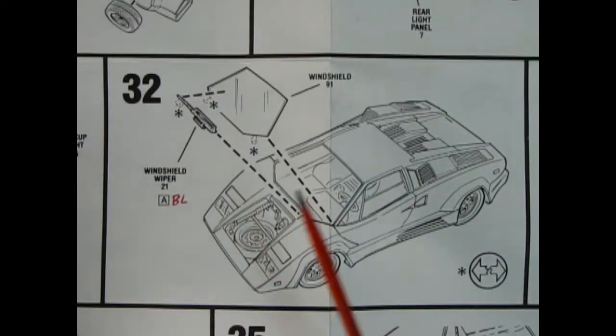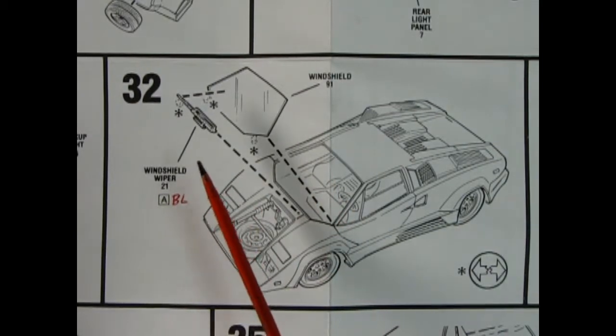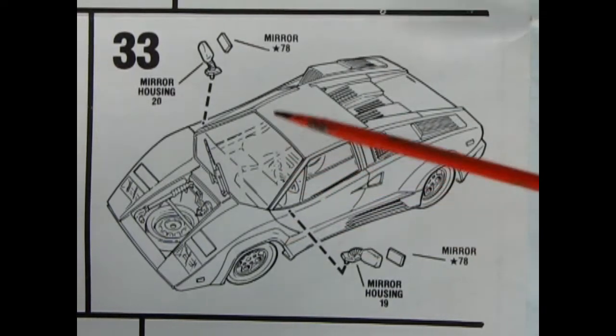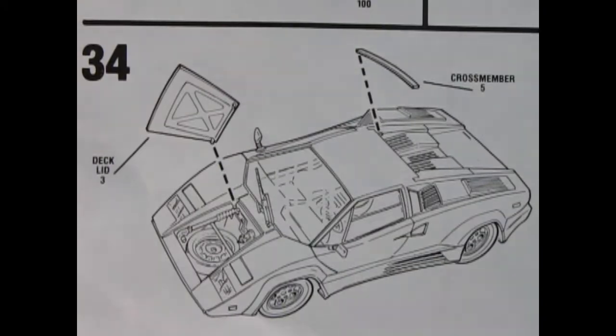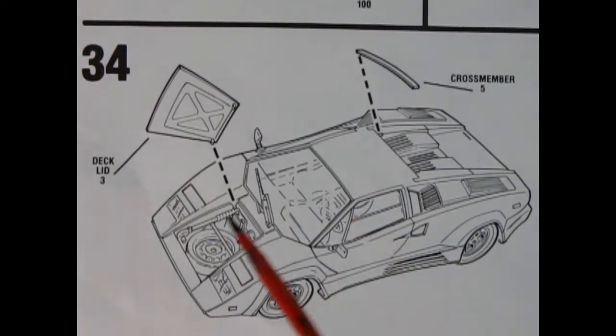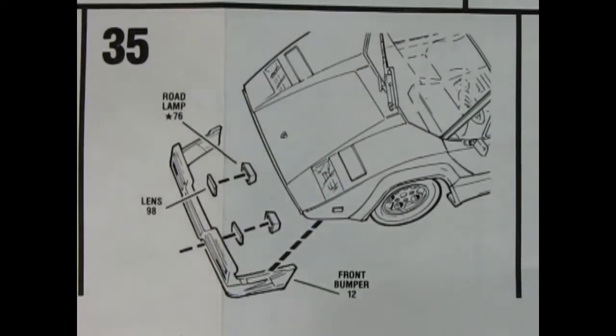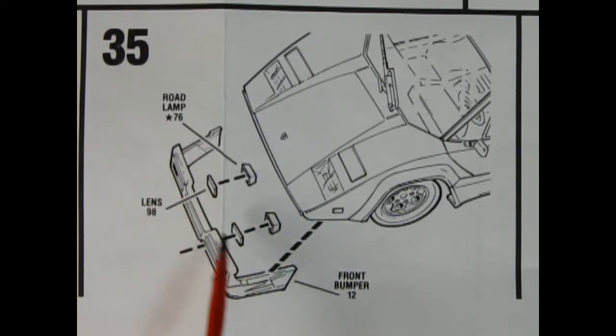Now in case you were wondering where that front windshield was, here it glues on from the outside and you get that really cool windshield wiper as well. Panel 33 shows our side view mirror housings being glued on the car and then you put the mirror in through the housings itself. Down here in panel 34 we see the deck lid being glued up in the front as well as this cross member off the back. And panel 35 shows the front bumper being glued in place and there's these cool road lamps behind with lenses as well. Now I didn't see any decals in here so I guess I'll have to sign off for this video. So have a good one everybody and we'll see you next week.